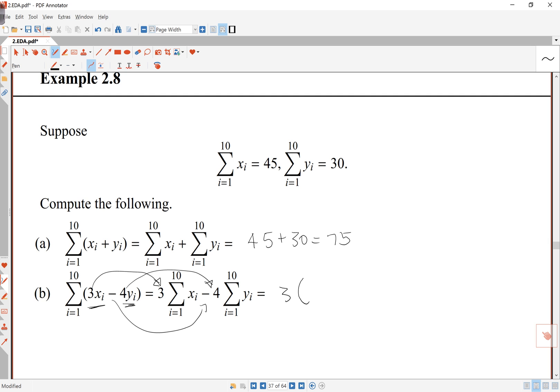and the 3 and the 4 come in the middle, so it's 3 times, and the sum of the x's is 45, minus 4 times, and the sum of the y's is 30, so 3 times 45 is going to be 135, minus 120, and that comes to 15.